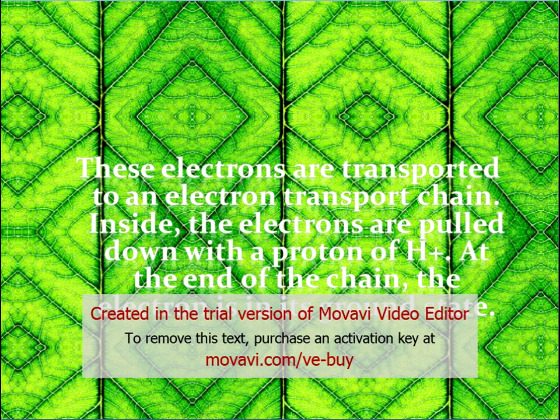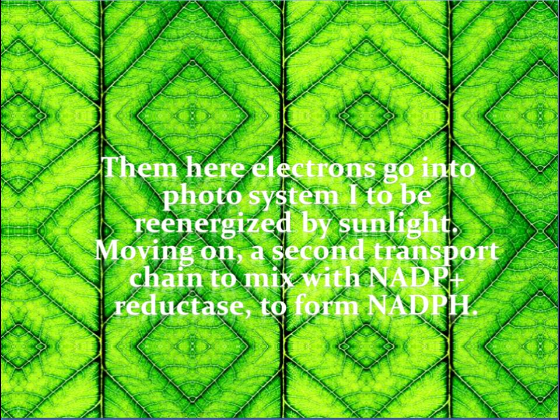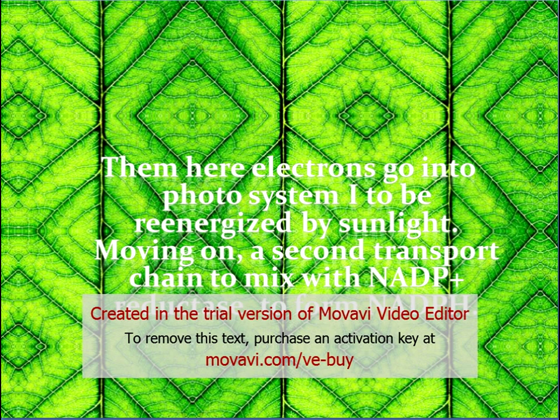The low-energy electrons go into Photosystem I to be re-energized by sunlight, then move through a second transport chain to mix with NADP+ and reductase to form NADPH.